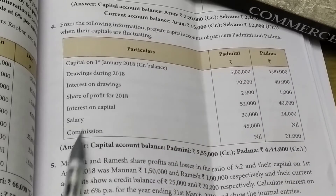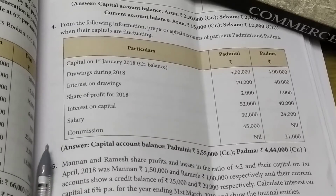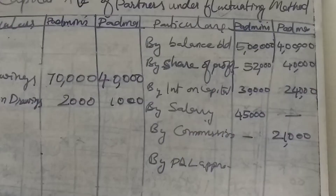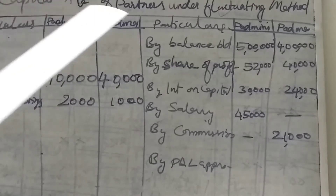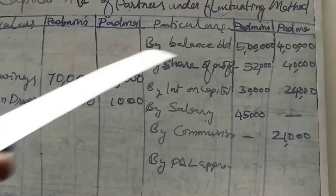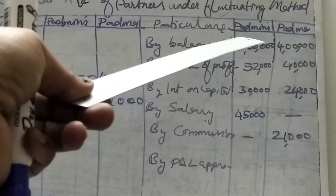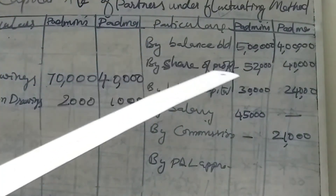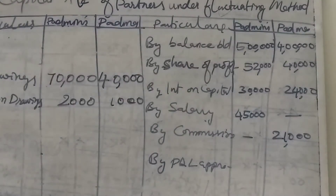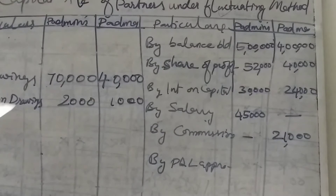Based on the fluctuating method, we want to prepare capital accounts. See the board: capital accounts of partners under fluctuating method — Padmini and Padma. First opening balance: 5 lakhs and 4 lakhs as given in the question. Next, drawings: 70,000 and 40,000 on the debit side.